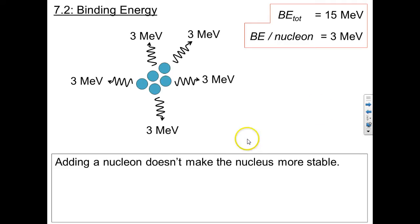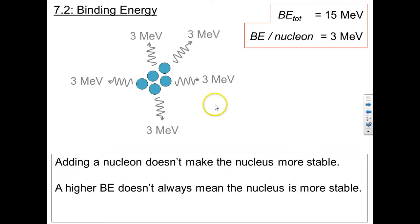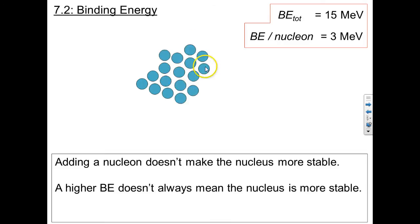So even though the binding energy has increased, even though this number increased, adding a nucleon hasn't made this nucleus any more stable. So a higher binding energy doesn't always mean the nucleus is more stable. In fact, I could take 12 more nucleons and add them all on, and this would make the total binding energy really huge, right? This will become 51 MeV, but as long as this number hasn't changed, it will still only take three MeV to break apart each nucleon.